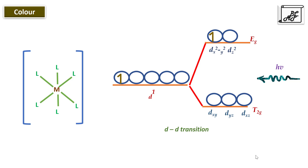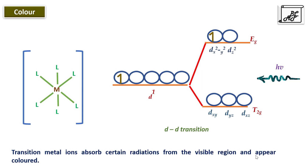Among all transition elements, those that absorb radiation from the visible region of the spectrum appear colored. Elements whose compounds absorb from the infrared to ultraviolet region (higher energy) are colorless.